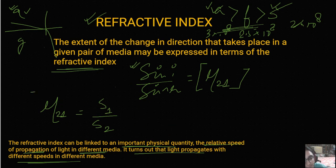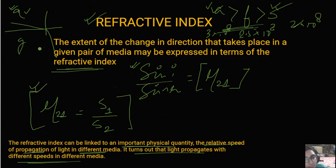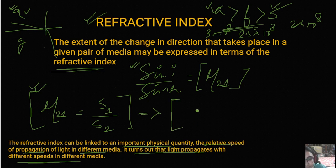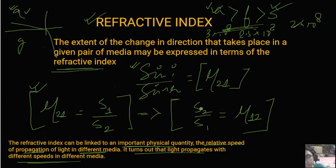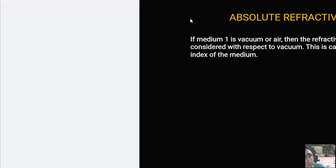So this formula gives us the refractive index. The refractive index is always of the second medium with respect to the first. If light travels from air to glass, using this formula you get the refractive index of glass with respect to air. If you reciprocate it — S2/S1 — you get the refractive index of the first medium with respect to the second.